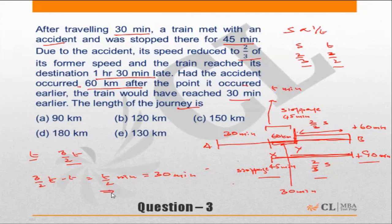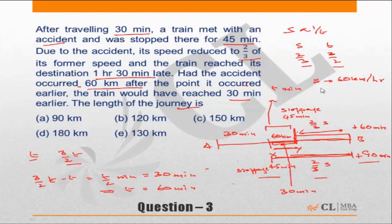The delay is T/2 and we know the delay equals 30 minutes, which implies the normal time T was 60 minutes. So the 60-kilometer stretch would have been covered in 60 minutes at normal speed. Therefore, the normal speed of the train is 60 kilometers per hour. Now that we have the speed, let us find the length of the journey.